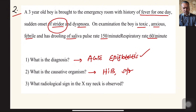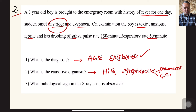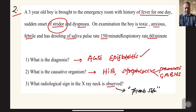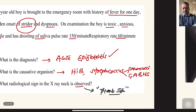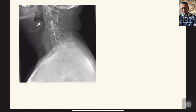The causative organism is mainly Haemophilus influenzae type B, and Streptococcus group — mainly Streptococcus pneumoniae or group A beta-hemolytic streptococci. The classical radiological sign on X-ray of the neck (lateral view) is the thumb sign. We see a swollen epiglottis which looks like a thumb sign on the lateral neck X-ray.